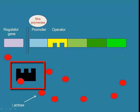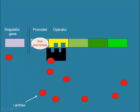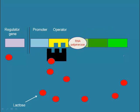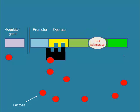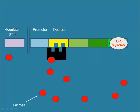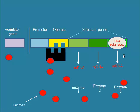Lactose binds to the repressor, changing its shape. As a result, the repressor cannot fit into the operator and block RNA polymerase. As a result, RNA polymerase can move past the operator and transcribe the genes for lactose metabolism.